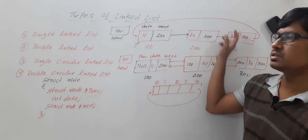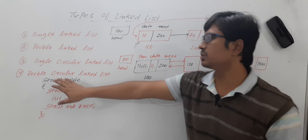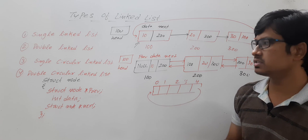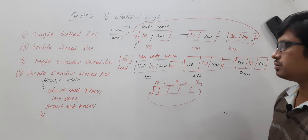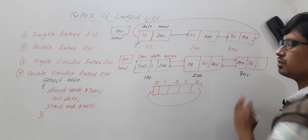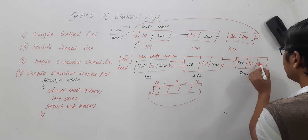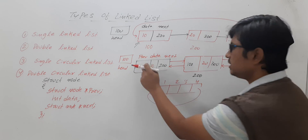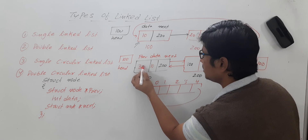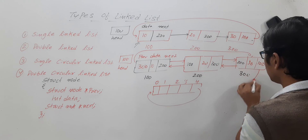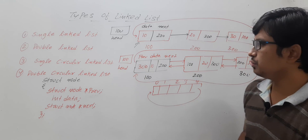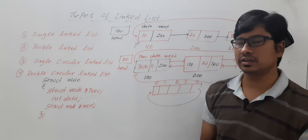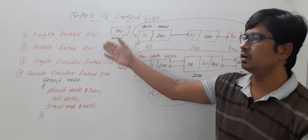Now, the double circular linked list. If you apply the concept of circularity to the double linked list, it becomes a double circular linked list. The last node's next pointer holds the address of the first node (100), and the first node's previous pointer holds the address of the last node (300). This introduces circularity in the double linked list, which is called the double circular linked list.